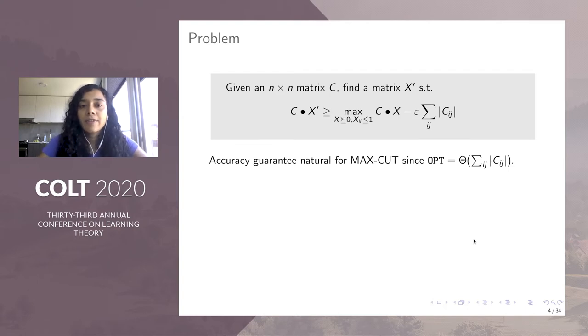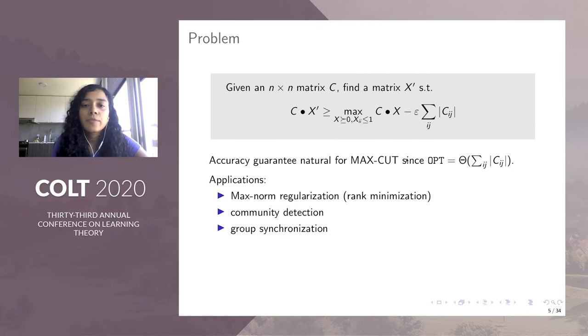When C is a graph Laplacian matrix, this problem is the SDP relaxation of max cut, as was given by Goemans and Williamson in 1995. And in that case, this epsilon accuracy guarantee is natural, because max cut has the following opt. This problem has applications not just in max cut, but also in max norm regularization for rank minimization, community detection, et cetera.